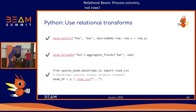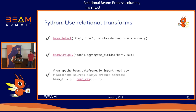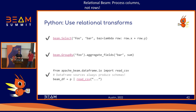Also recommend using the Beam data frame API — some of those IOs automatically retrieve the schema for you, and you can even use that with conventional Beam by converting the data frame back to a PCollection. If you're interested in data frames, come to my talk later today for a tour of how it works from the user perspective and also how it works under the hood.